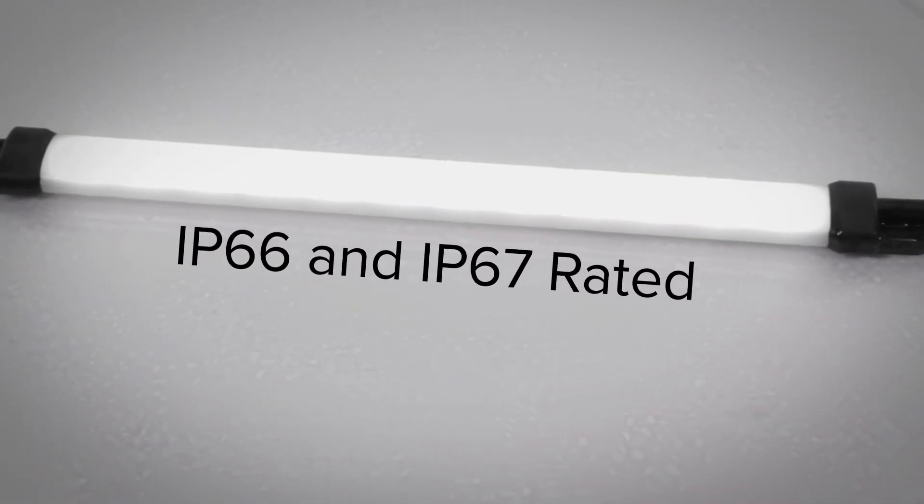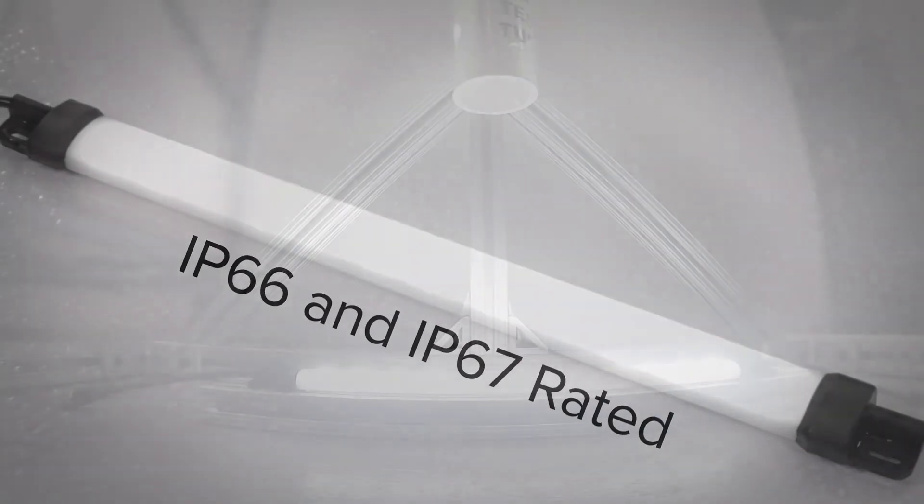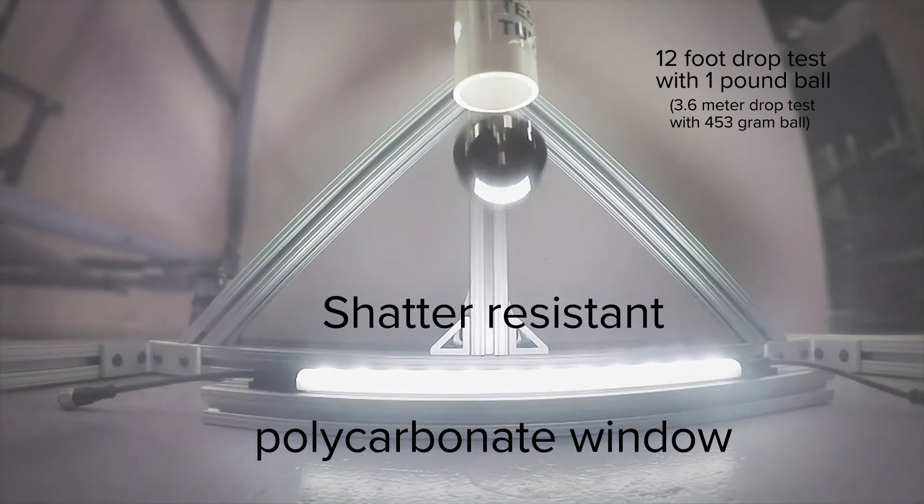The IP66 and IP67 rated light is designed to survive harsh, wet industrial environments and the shatter-resistant polycarbonate window makes it perfect for a wide variety of applications.